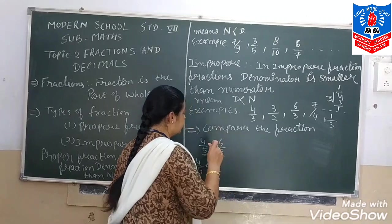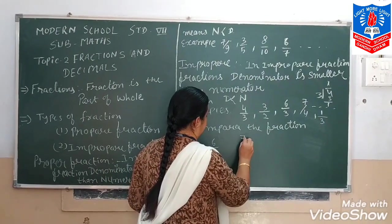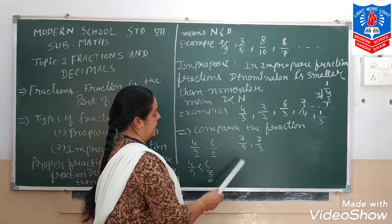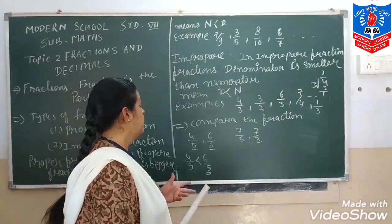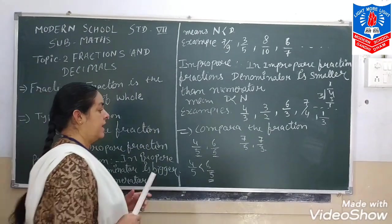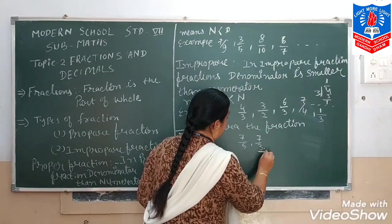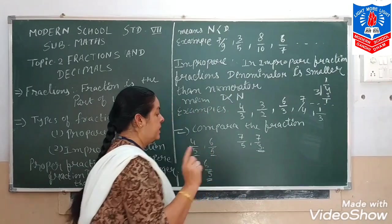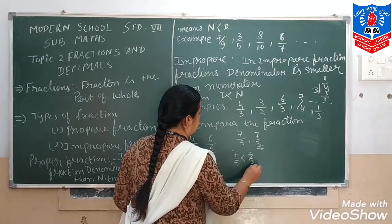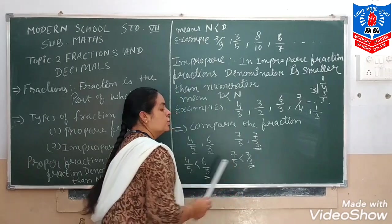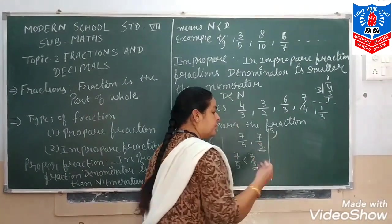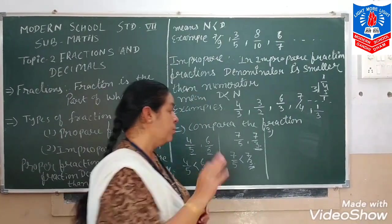Sometimes the numerators are the same but the denominators are different. For example, 7 by 5 and 7 by 3 — the numerator is the same but denominators are different. In this case, the smaller denominator gives the bigger fraction. So 7 by 3 is the bigger fraction because its denominator is smaller.